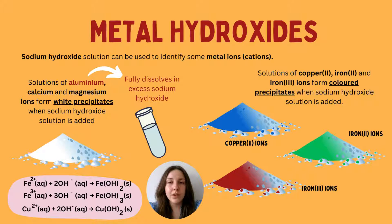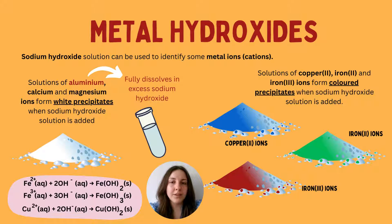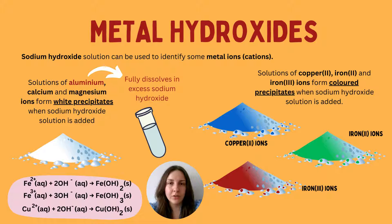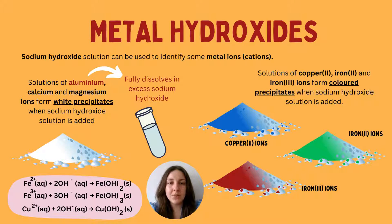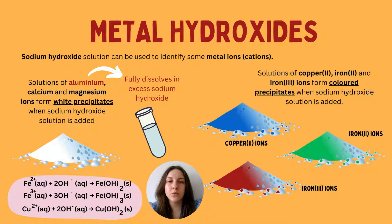Aluminium ions, calcium ions, and magnesium ions all form white precipitates when sodium hydroxide is added — you'll see a white powdery substance forming in the solution. The key difference is that when aluminium ions are mixed with sodium hydroxide, the precipitate will fully dissolve in excess sodium hydroxide, which is how you distinguish aluminium from calcium and magnesium ions.